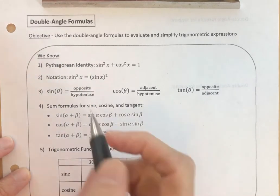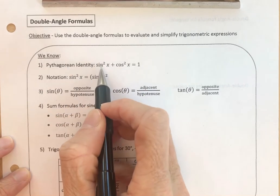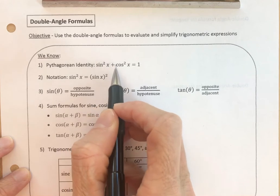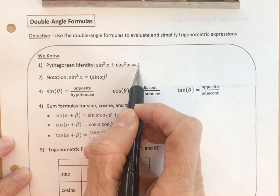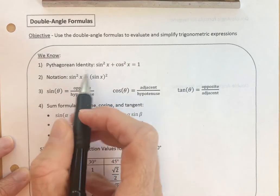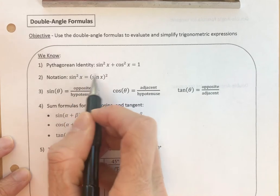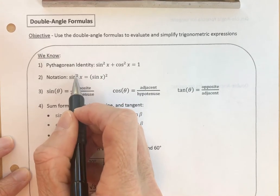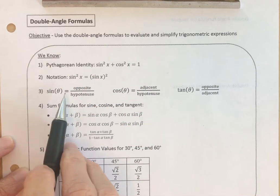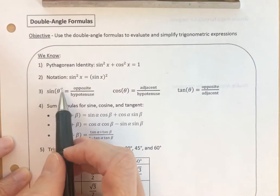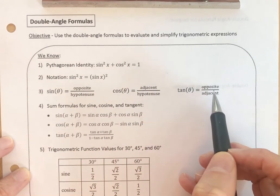The first thing we'll pull in is the Pythagorean identity, which says that the sine of an angle squared plus the cosine of an angle squared is equal to one. Just a note on notation — these two represent the same idea. Remembering from right triangle trigonometry that sine is opposite over hypotenuse, cosine is adjacent over hypotenuse, and tangent is opposite over adjacent.